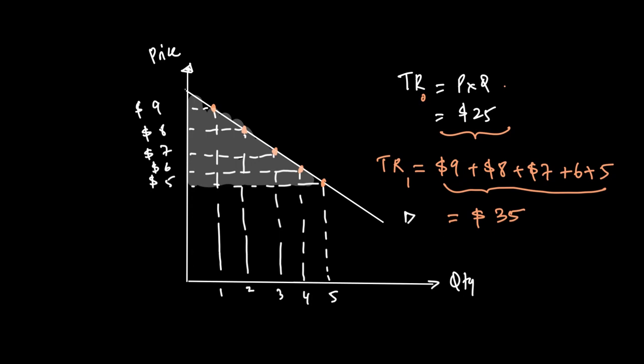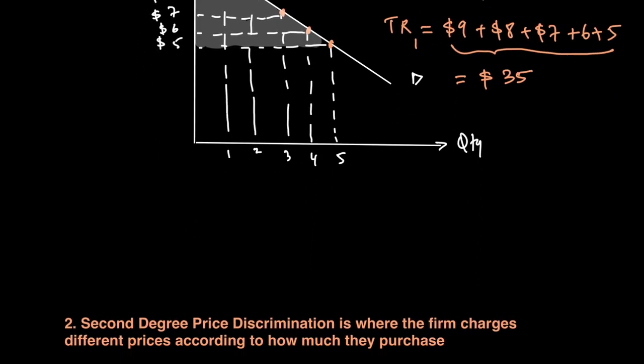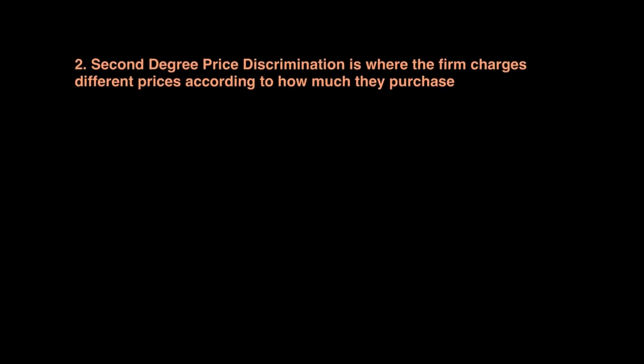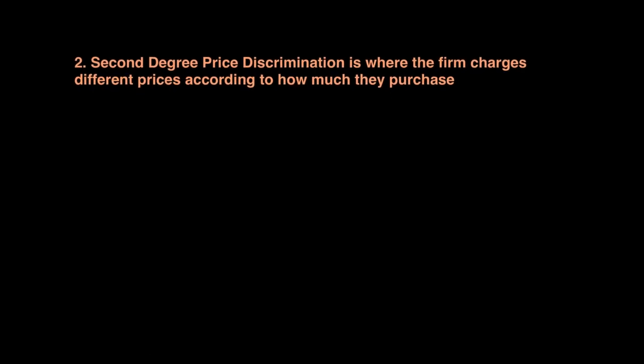Let's move on to second degree price discrimination. In second degree price discrimination, the firm charges different prices according to how much the consumer purchases. So if I buy fewer units I may pay a different price than another consumer who buys much more.